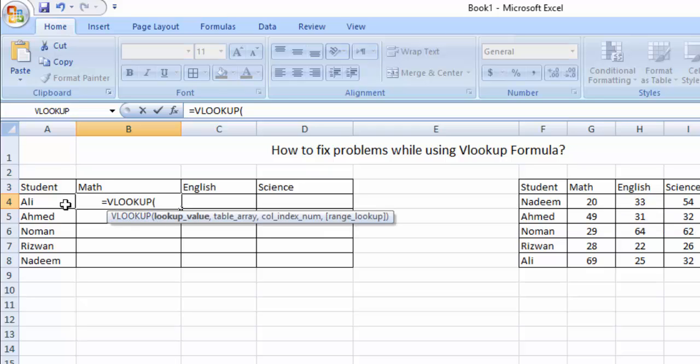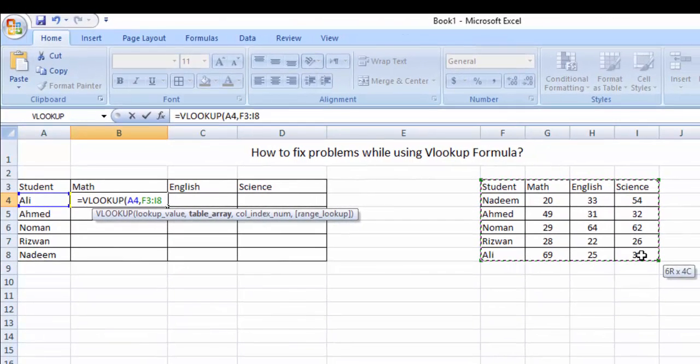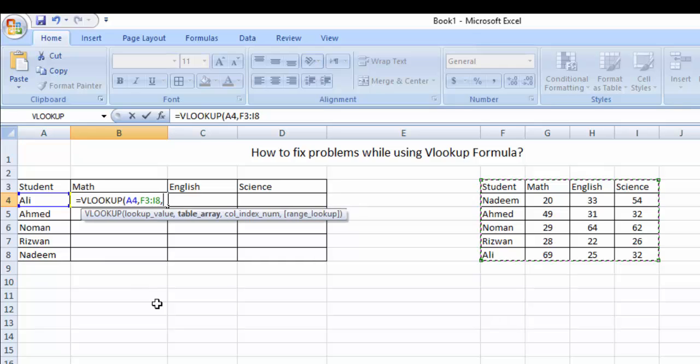Friends, as we are going to see the marks of Ali in Math, we will select Ali. And now we are going to select the range from where we get the data. Then comma.